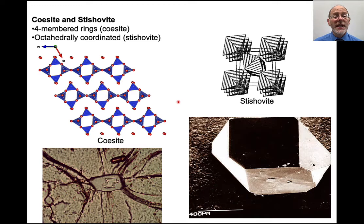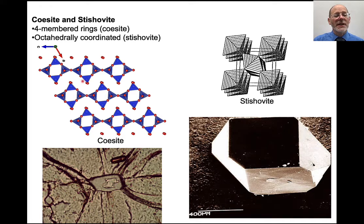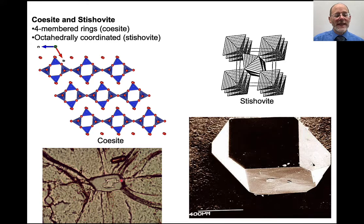Coesite and stishovite have rather interesting structures. Coesite also contains silica tetrahedra, but they are linked into four-membered chains rather than six-membered chains, which compacts the structure and makes it a much denser mineral. Here is a coesite inclusion with quartz around it inside a garnet — there's a nice little rutile crystal with radial fractures extending from it. As the coesite inverts to form quartz, the volume expands considerably, blowing apart the garnet.